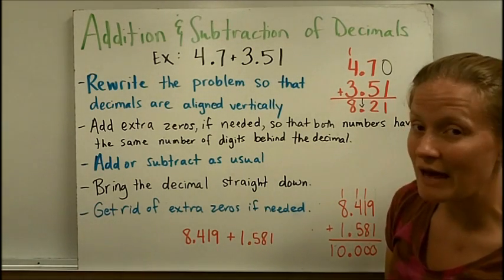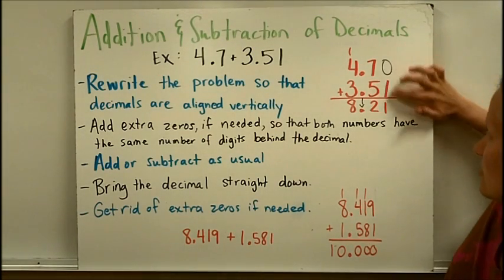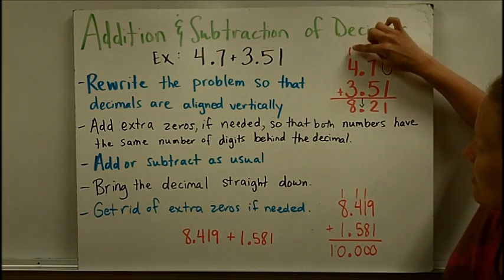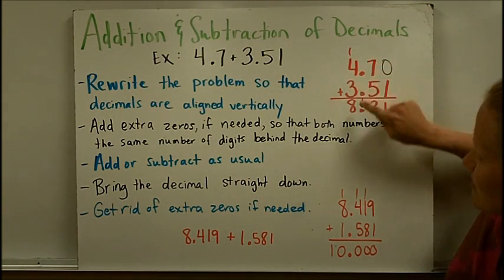Then I'm going to just add or subtract as usual. Zero plus one is one. Seven plus five is twelve. Carry that one. One plus four is five, plus three is eight.